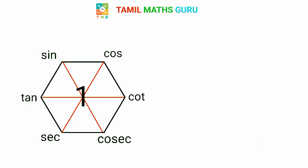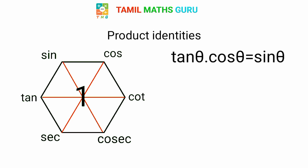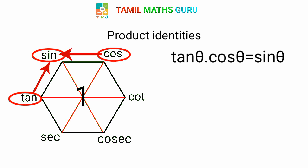Next is one method of product of identities. We already know tan — tan can be written as sin by cos. In these three identities, we have the middle one, and when we multiply the two, we get the middle one. So, tan into cotθ is equal to sinθ.